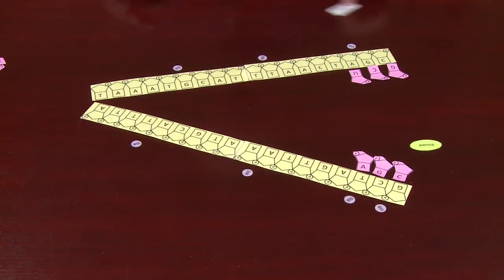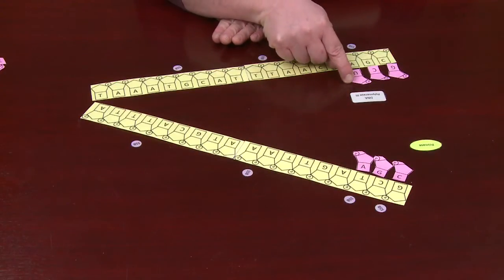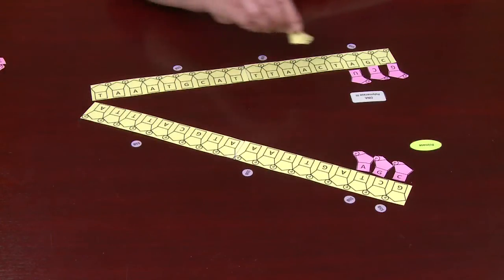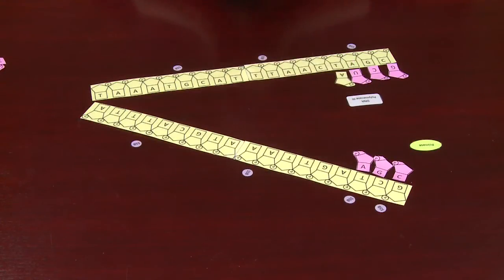The next enzyme that comes in is DNA polymerase 3. Where you have this free 3' hydroxy, DNA polymerase 3 will perform synthesis and start to add in DNA. As you can see, DNA is yellow in my model and RNA is pink.